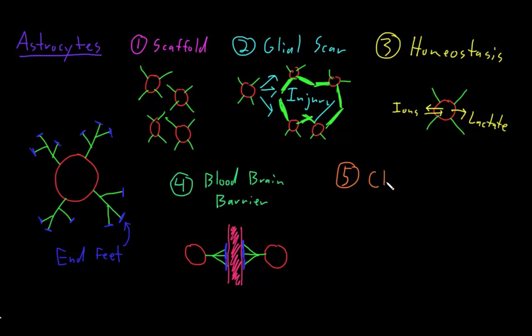And one more very important function that the astrocytes perform is that they help to clear out synapses between neurons. And so synapses are the connections between neurons and their target cells. So if we drew an axon of one neuron coming down here, and this will be the terminal of the axon, and then this axon is forming a synapse with the dendrite of another neuron here.